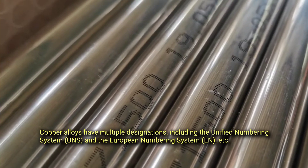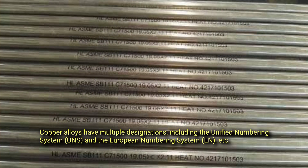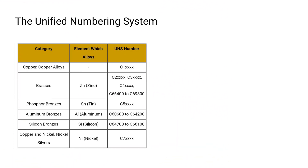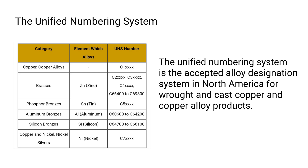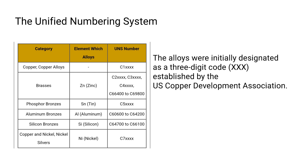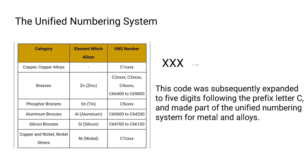Copper alloys have multiple designations, including the Unified Numbering System and the European Numbering System. The Unified Numbering System is the accepted alloy designation system in North America for wrought and cast copper and copper alloy products. The alloys were initially designated as a three-digit code, established by the U.S. Copper Development Association. This code was subsequently expanded to five digits following the prefix letter C and made part of the Unified Numbering System for metals and alloys.